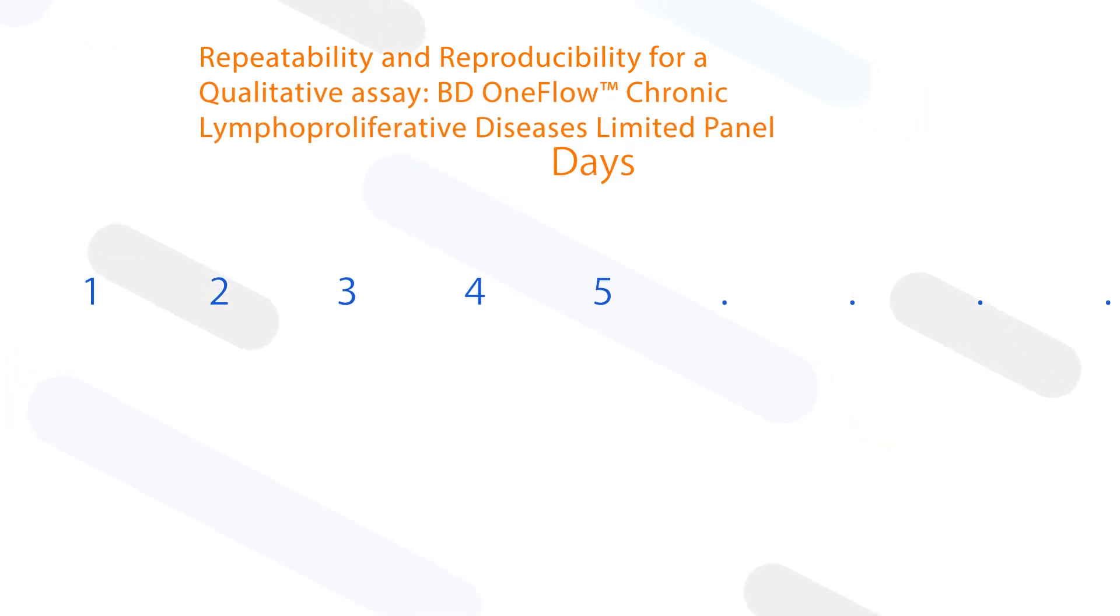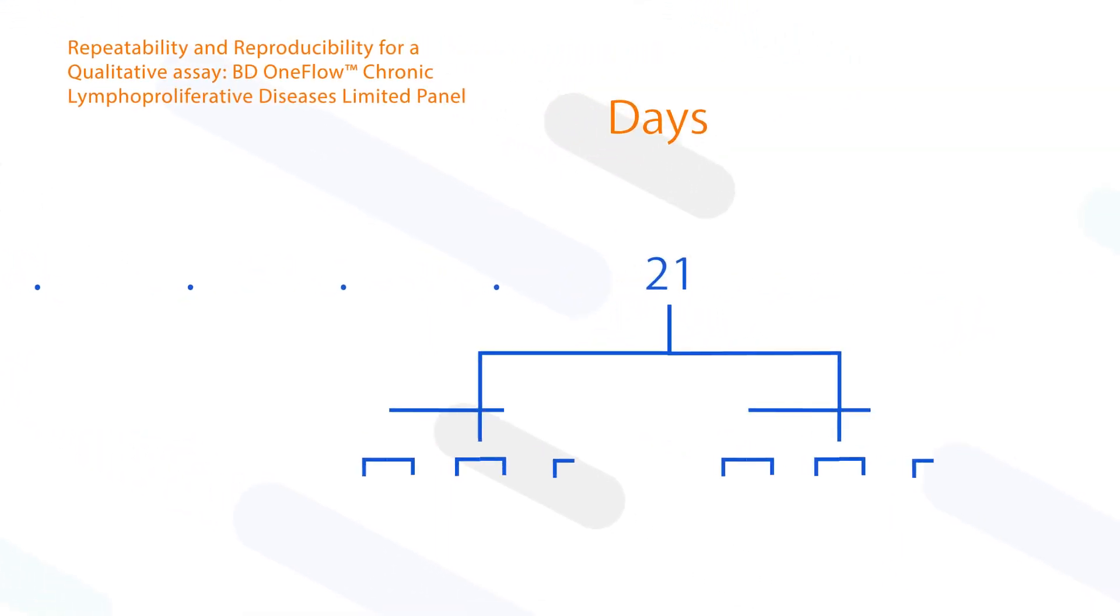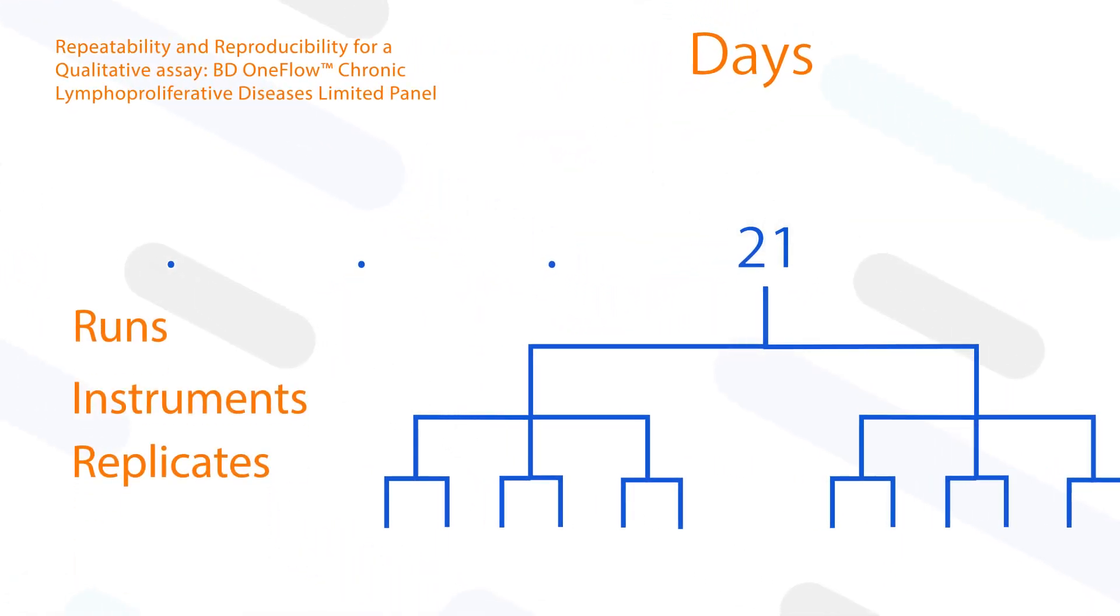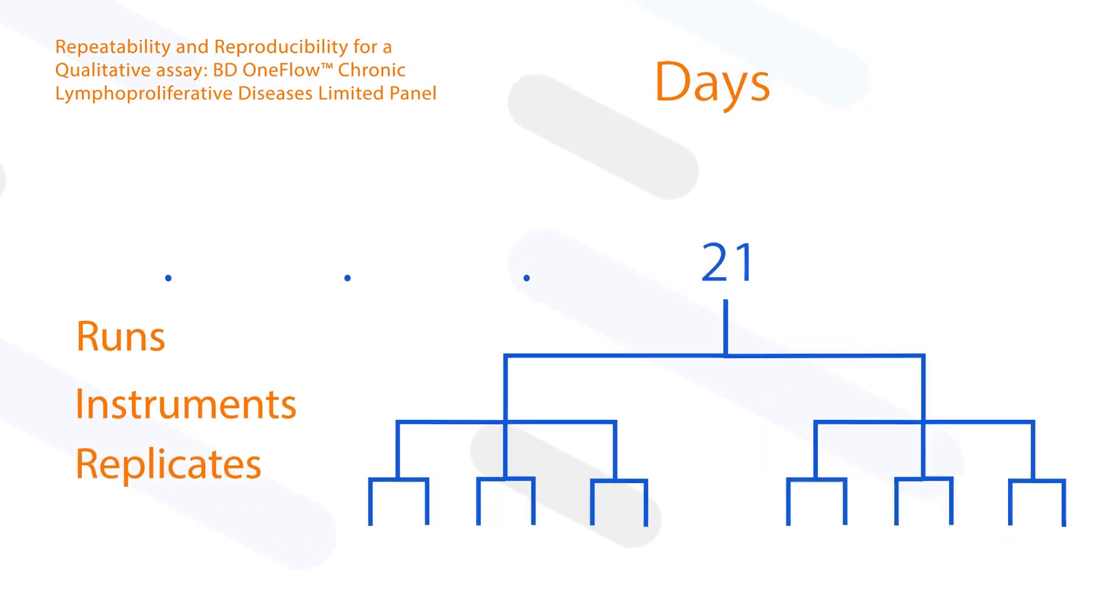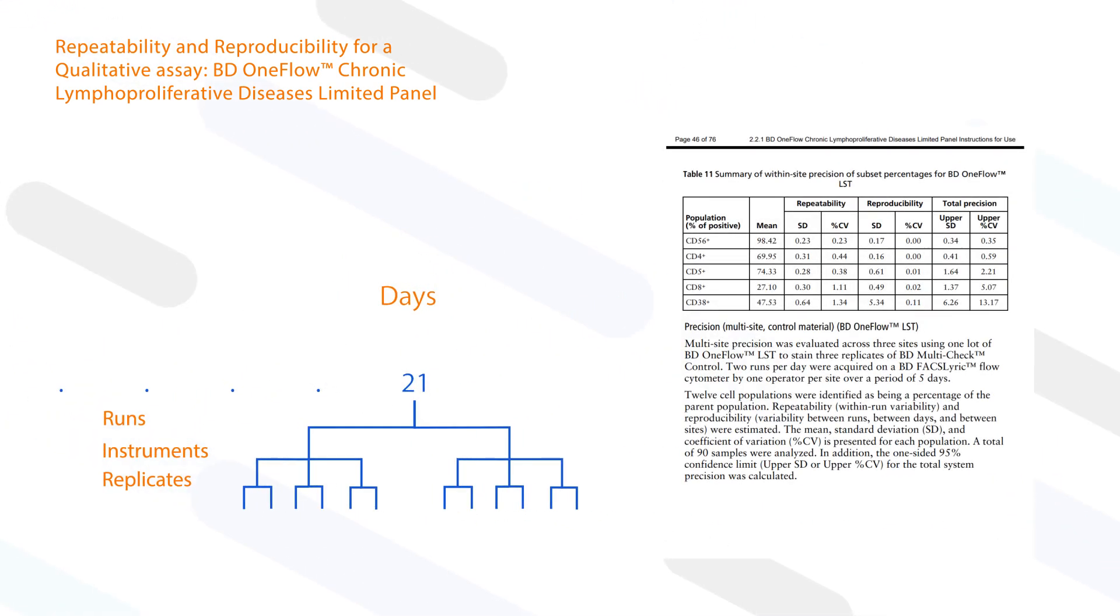For the qualitative BD OneFlow Chronic Lymphoproliferative Diseases Limited Panel, a 21-day single-site precision study was performed across three BD FACSLyric cytometers by acquiring control material stained in duplicates using three lots of the reagents over two daily runs.